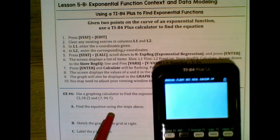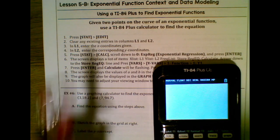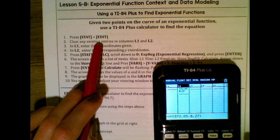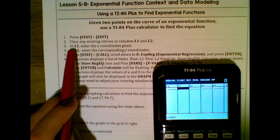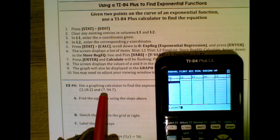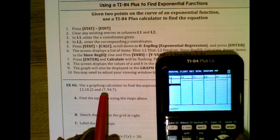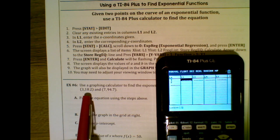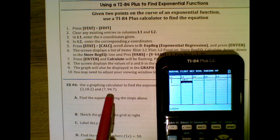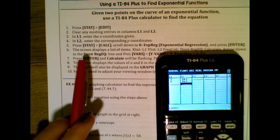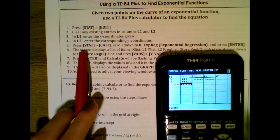I've got my calculator. We're going to hit STAT, EDIT, and clear List 1 and List 2 by hitting CLEAR. Then in List 1 I'm going to put the x-coordinates: 3 and 7. Then in List 2 you're going to enter the y-coordinates: 18.2 and 94.7.